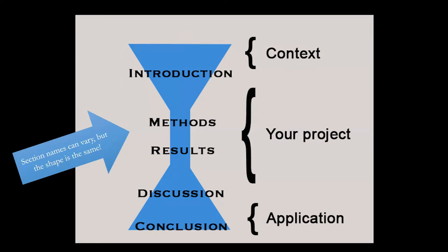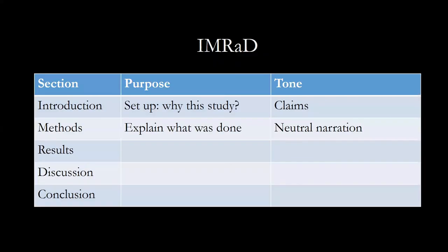So let's talk next about methods and results. The methods section explains your research process. For a literature review, you'll include information like the search terms you used, the databases you searched, the number of articles you reviewed, and your inclusion criteria. You'll use neutral narration here — just a straightforward account of what you did to accumulate and process your source materials.